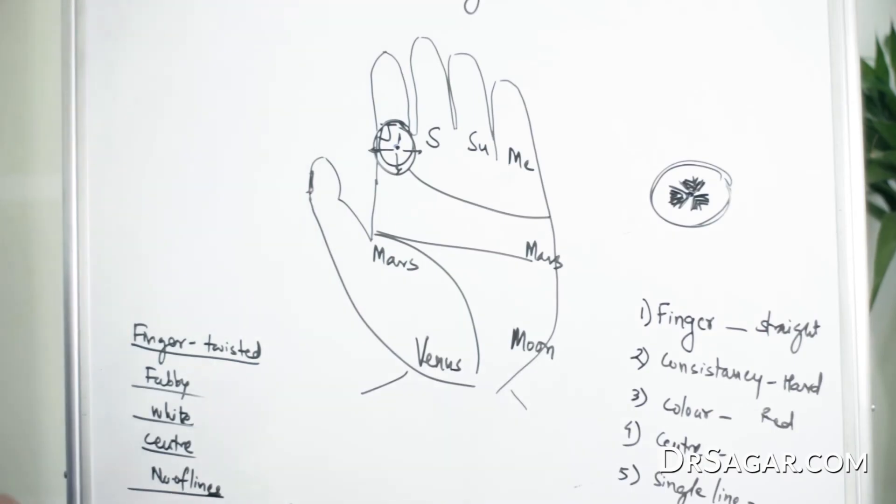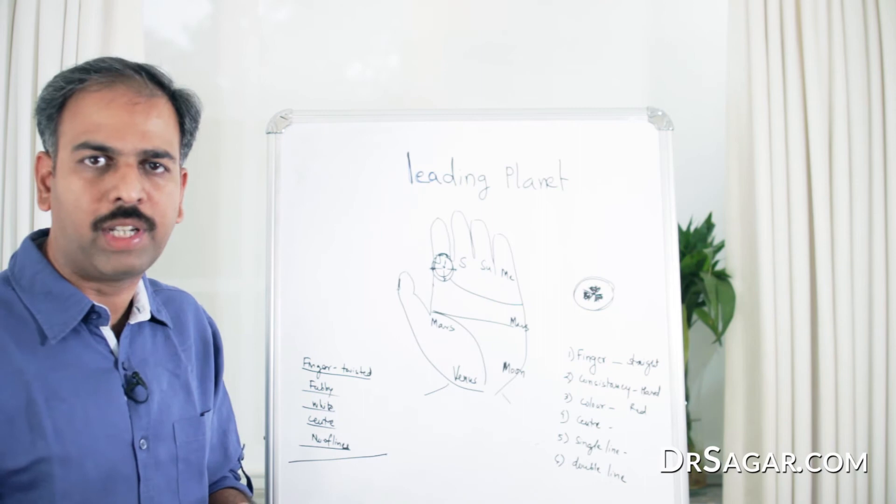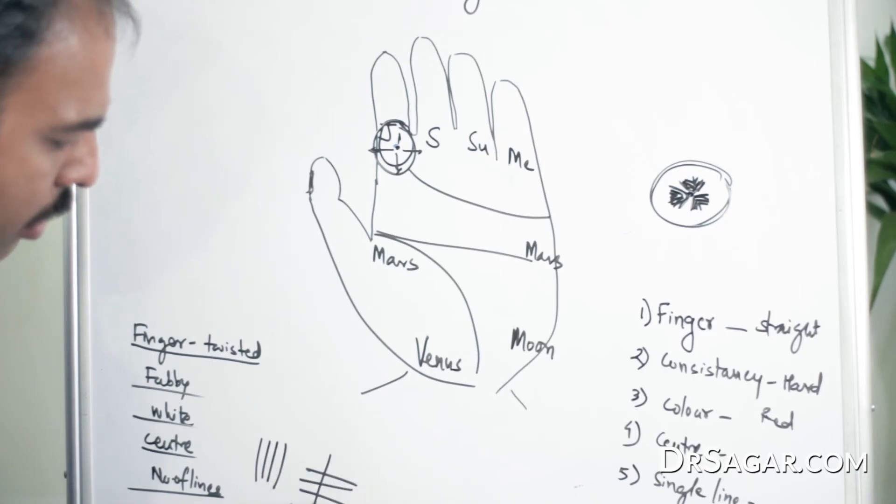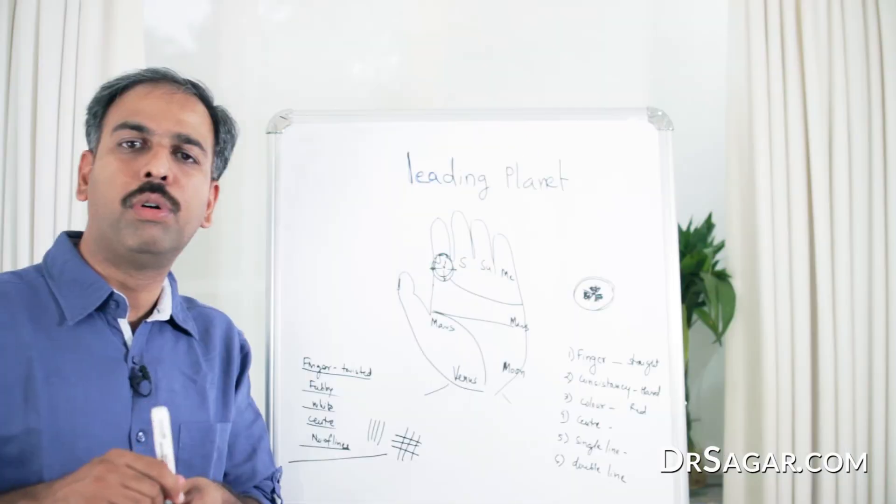Or, there are a number of lines, not a single line, but there are a number of lines, straight lines, or straight and horizontal lines, that is, criss-cross lines. All these characters make that planet most negative.